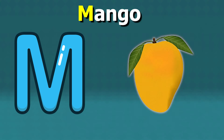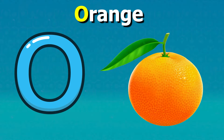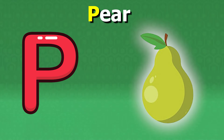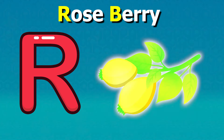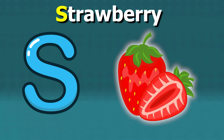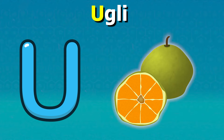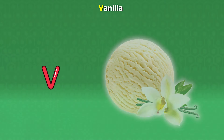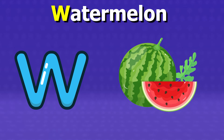M for Mangoes, N for Nashi, O for Oranges, P for Pears, Q for Quinces, R for Raspberries, S for Strawberries, T for Tamarind, U for Ugli Fruit, V for Vanilla, W for Watermelon.